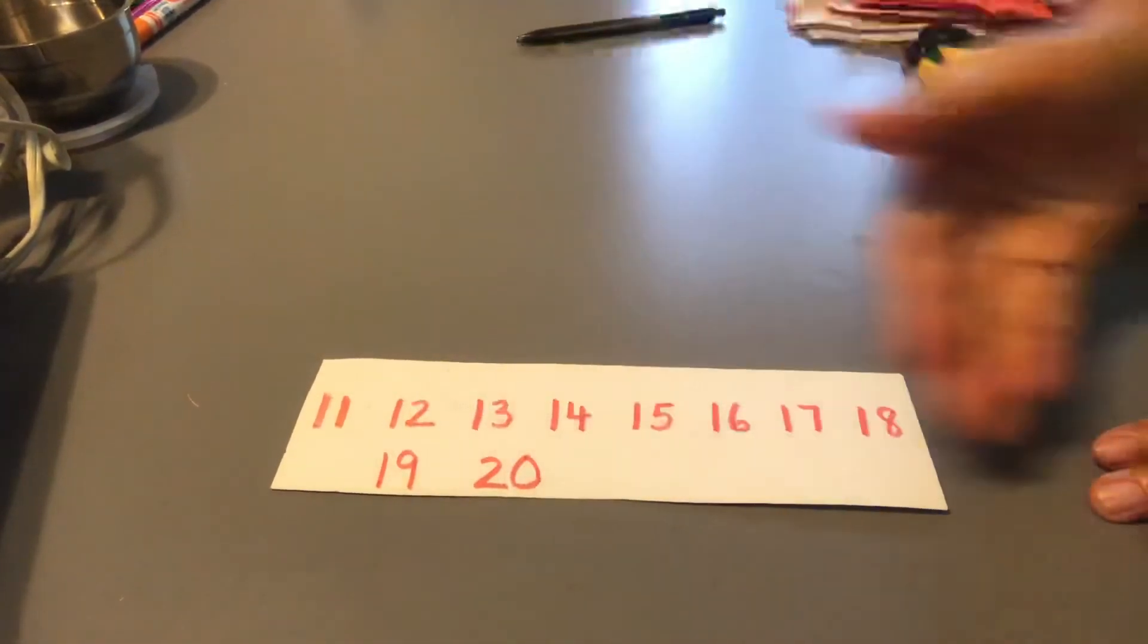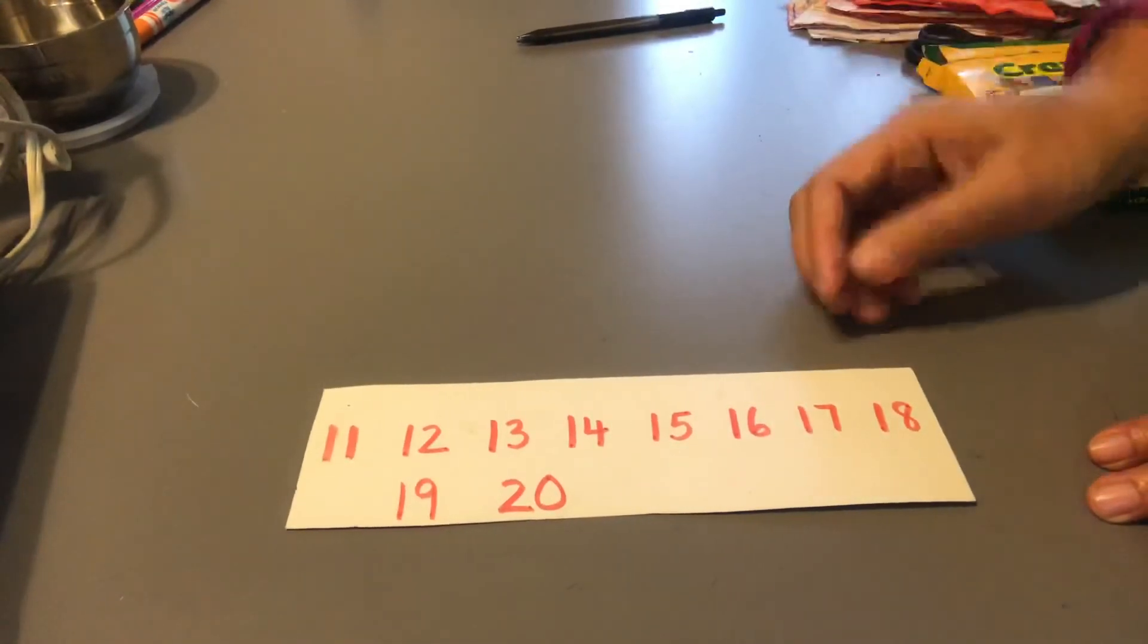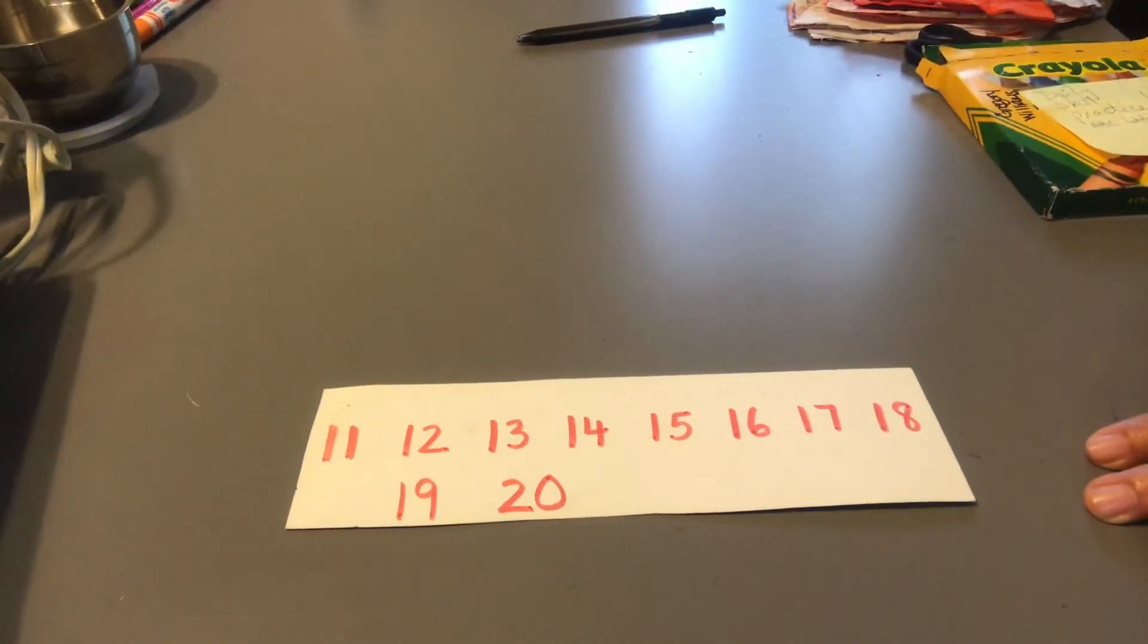If they already know how to recognize all of those, you can go all the way to 30. The more they know, the better they will do in kindergarten, and we're preparing them for kindergarten. Thank you.